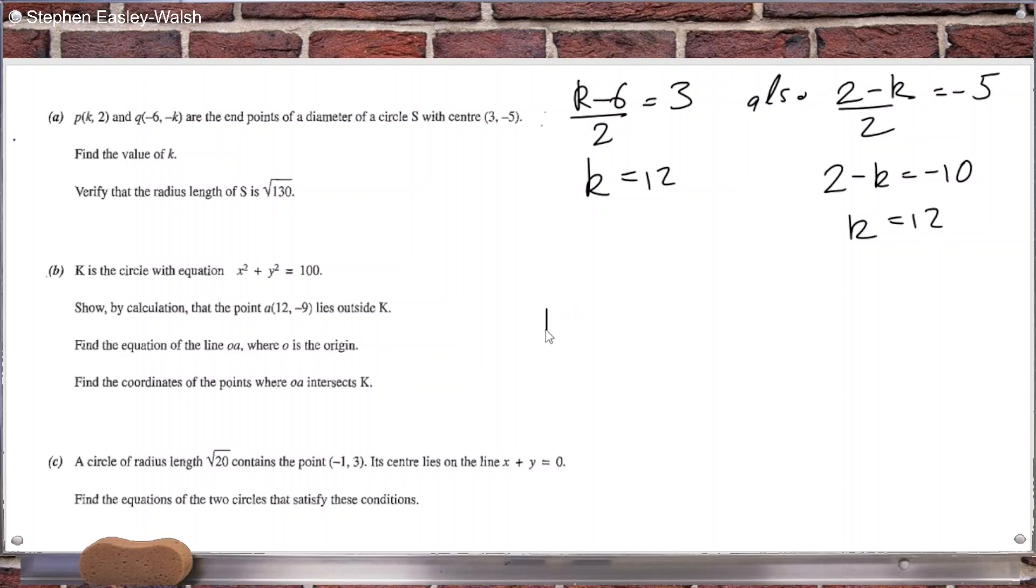So the radius would be the square root, let's see, 12 minus 3 squared plus 2 minus minus 5 squared. So that's the square root of 81 plus 49. Square root of 130.